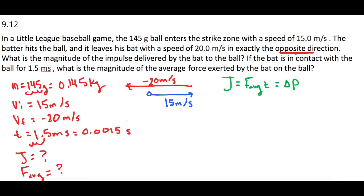So for the first part, since we're looking for J, let's use J equals delta P. So J is equal to P final minus P initial.